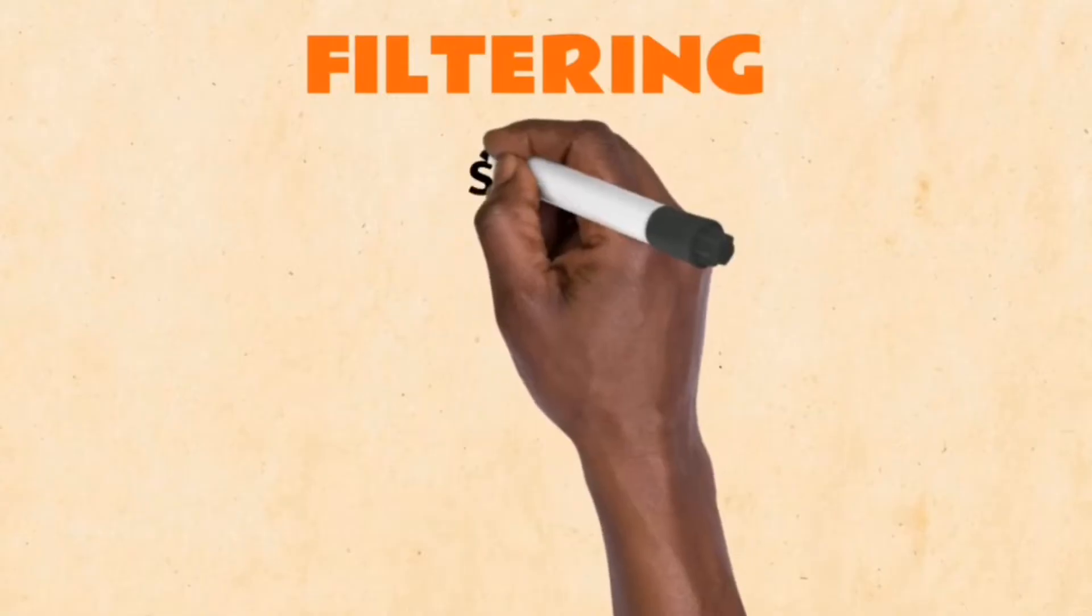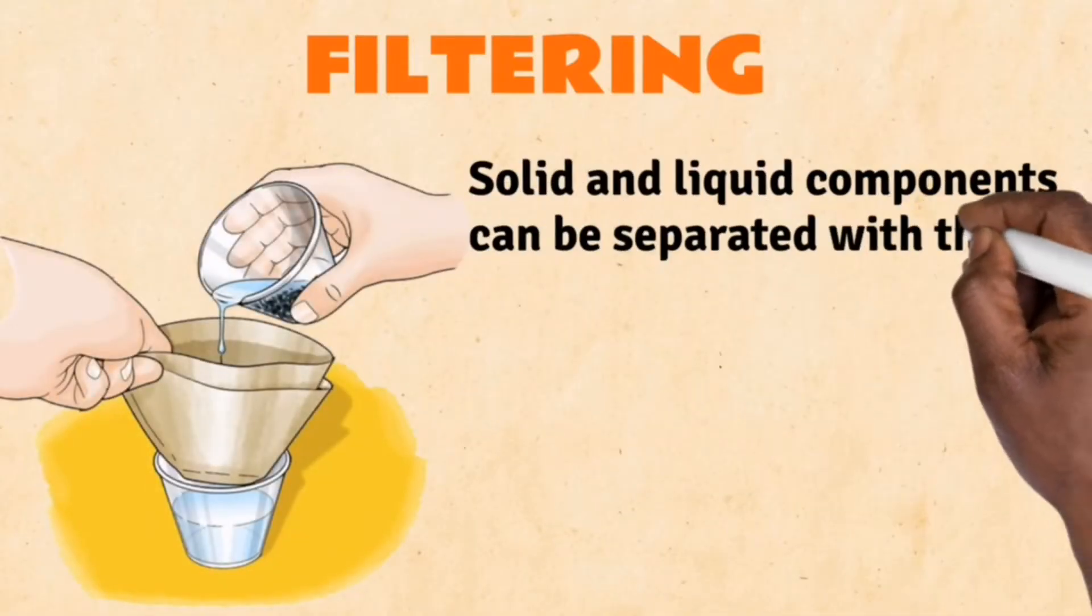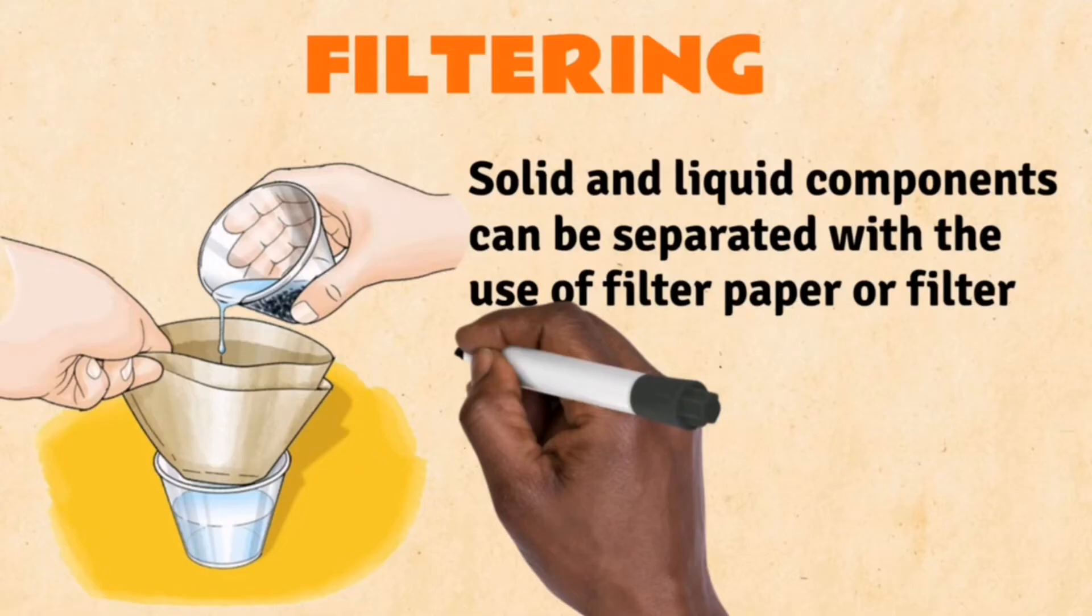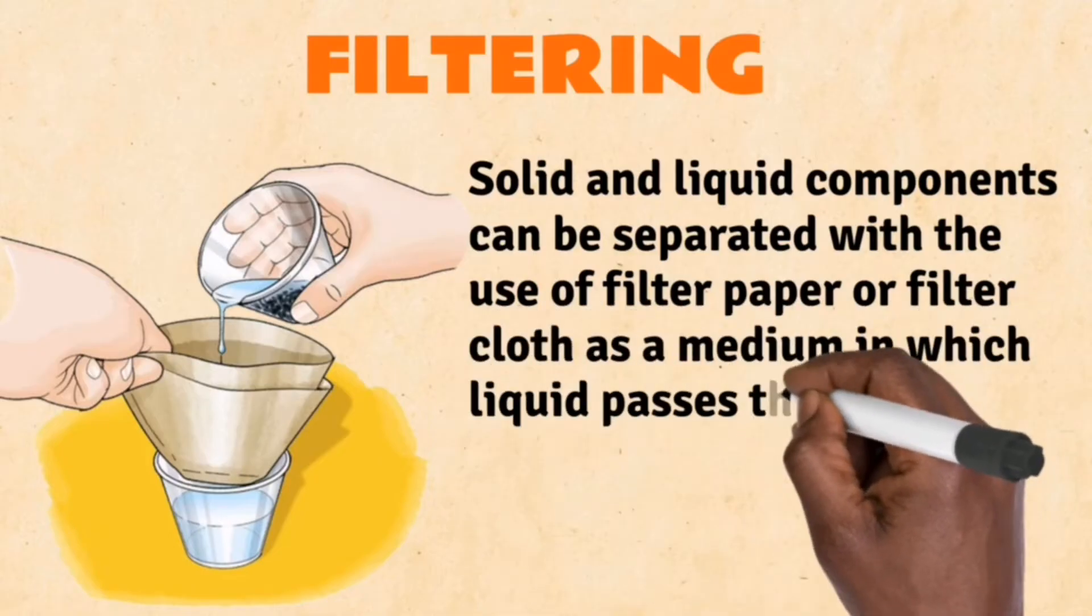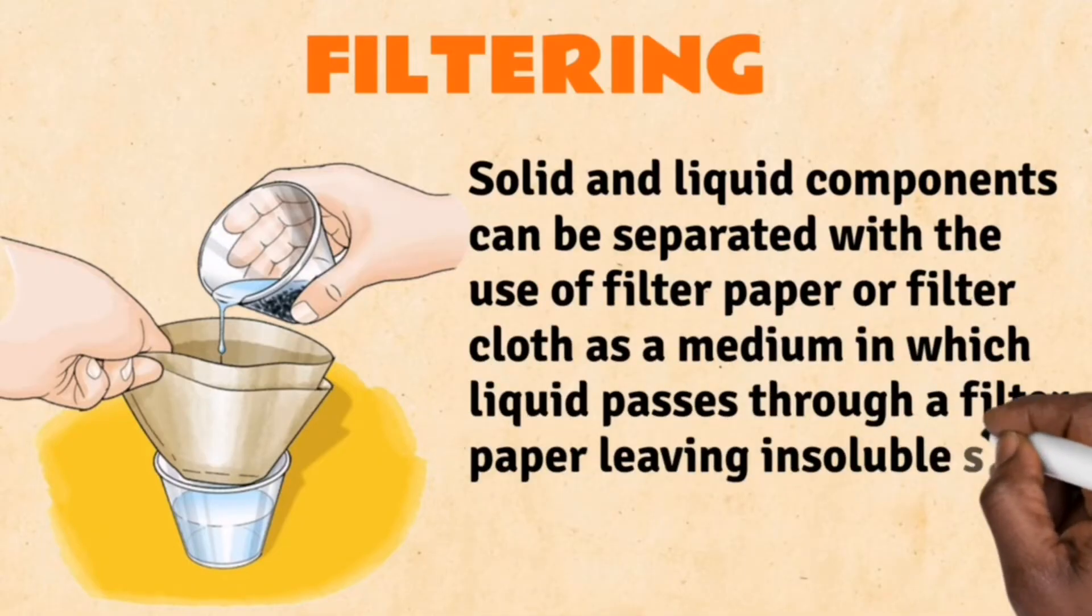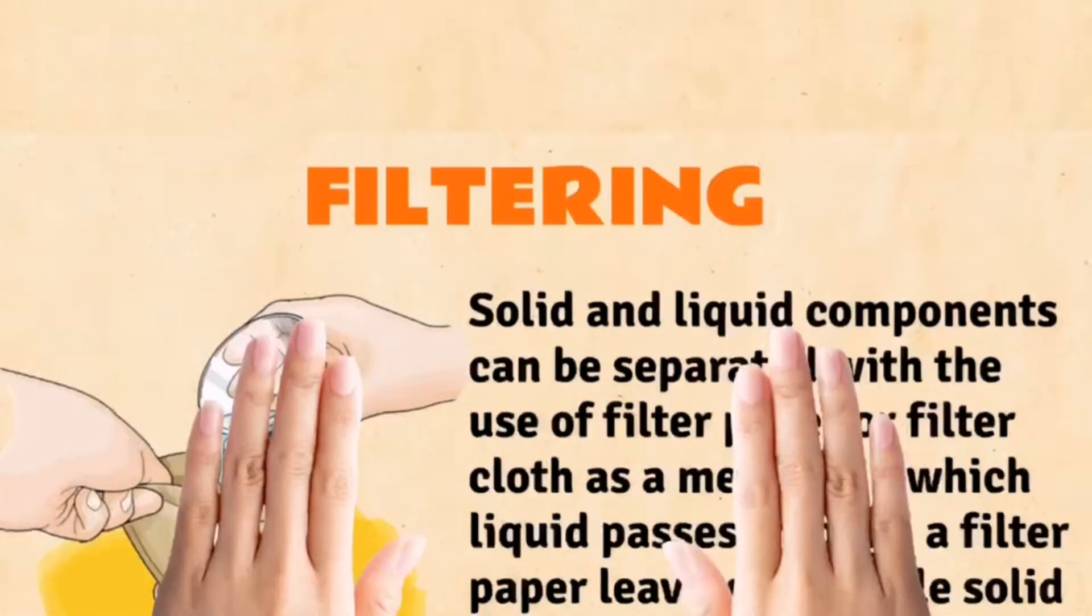Filtering. Solid and liquid components can be separated with the use of filter paper or filter cloth as a medium in which liquid passes through a filter paper, leaving insoluble solid material in the medium.